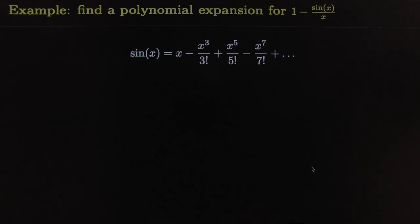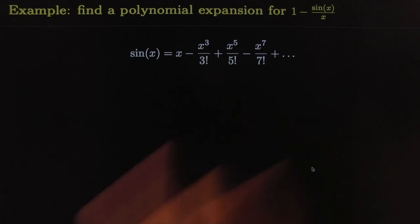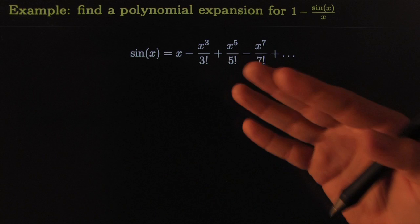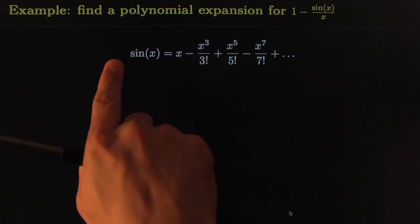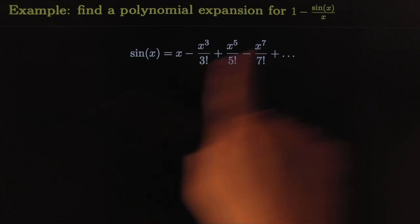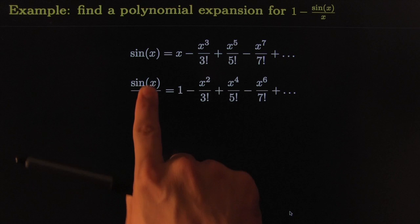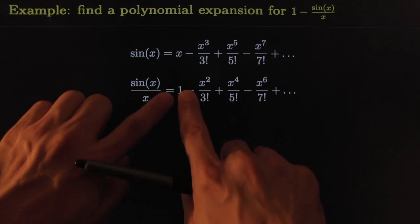For example, we already know that this is the expansion for sine because we did it a few examples ago. I know that if I divide by x, I would get something like this: divided by x would divide that by x, that would give me one, divide that by x...